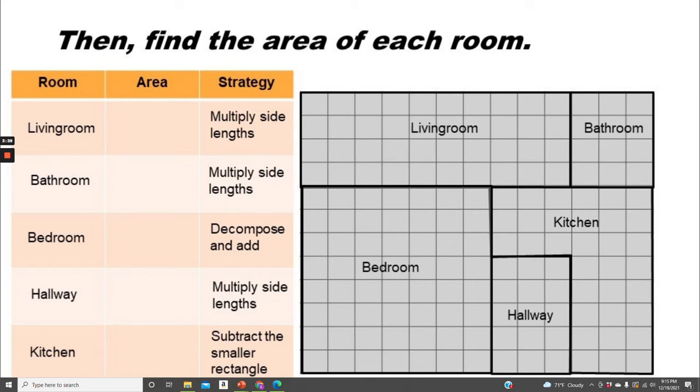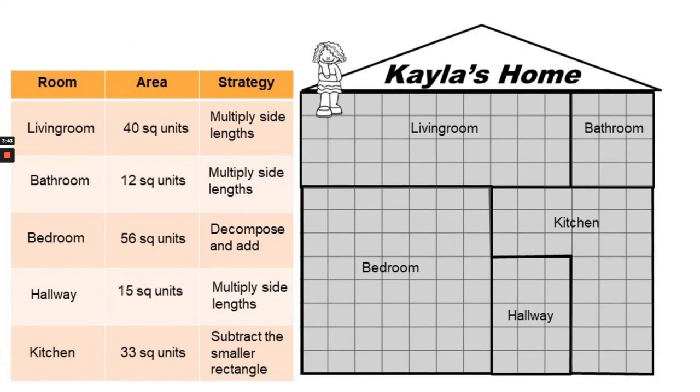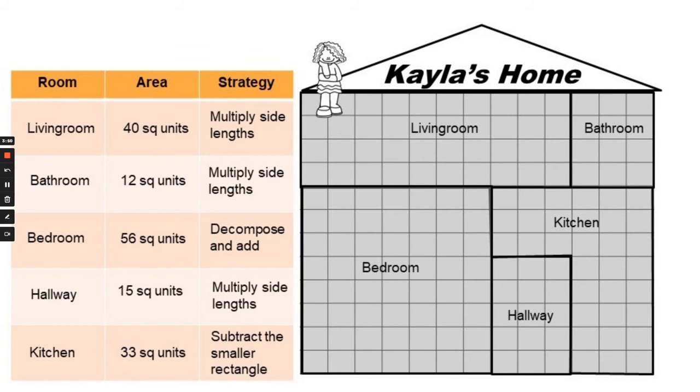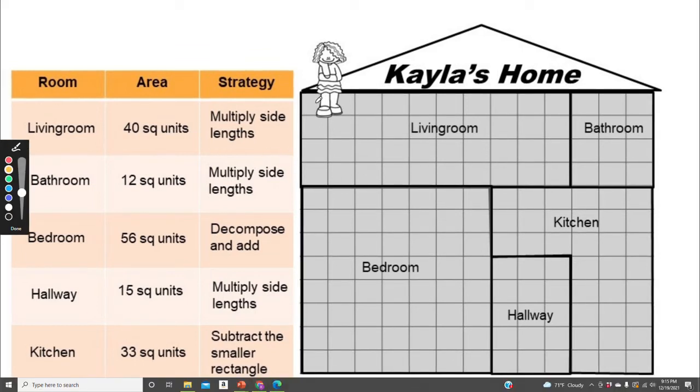Now we're going to find the area of each room. So the living room is 40 square units. I multiplied 4 times 10 because the side lengths are 4 and 10, and 4 times 10 equals 40. For the bathroom, I multiplied 3 times 4 equals 12. So the area of the bathroom is 12 square units.